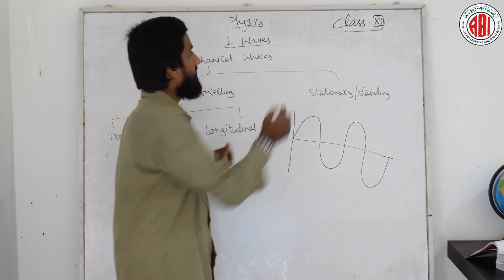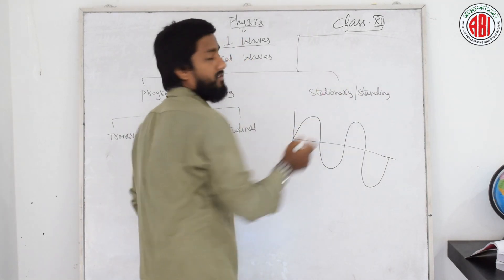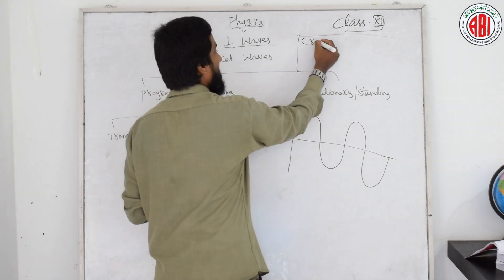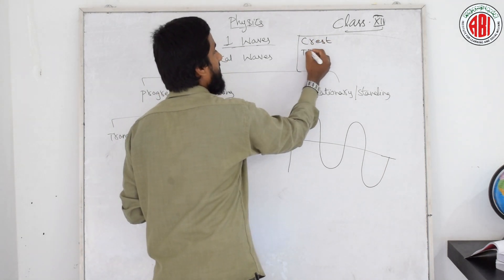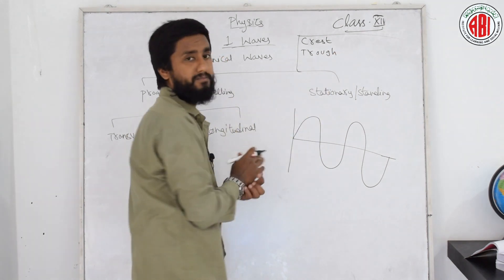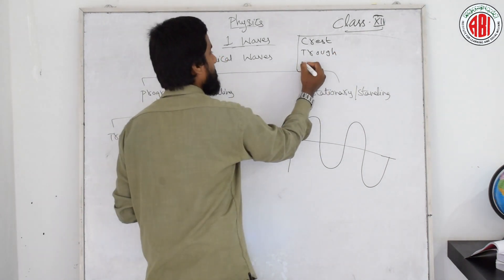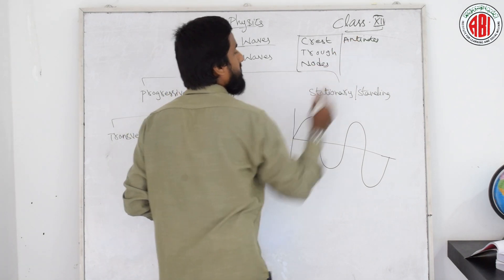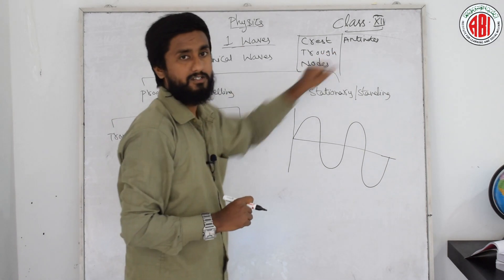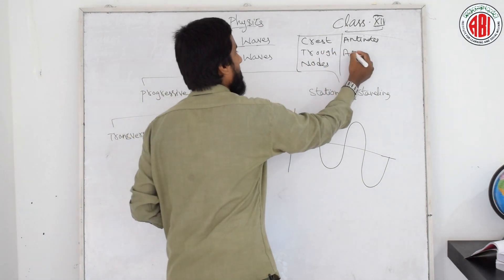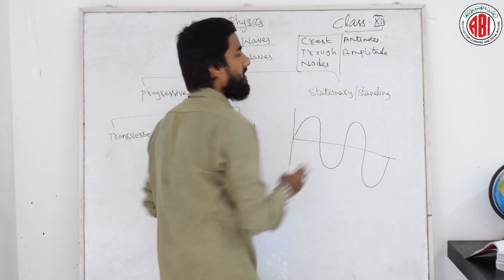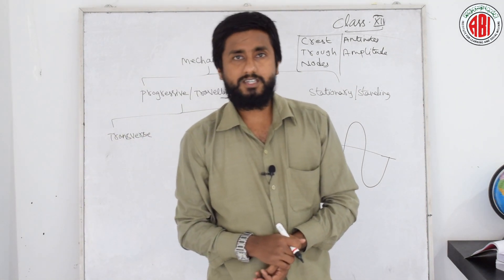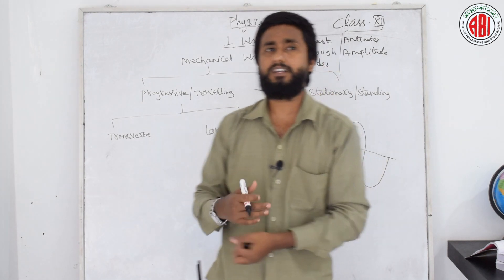The terms are: crest (C-R-E-S-T), trough (T-R-O-U-G-H), nodes (N-O-D-E-S), and antinodes. Apart from these, we have amplitude, phase, frequency, angular frequency, and displacement.